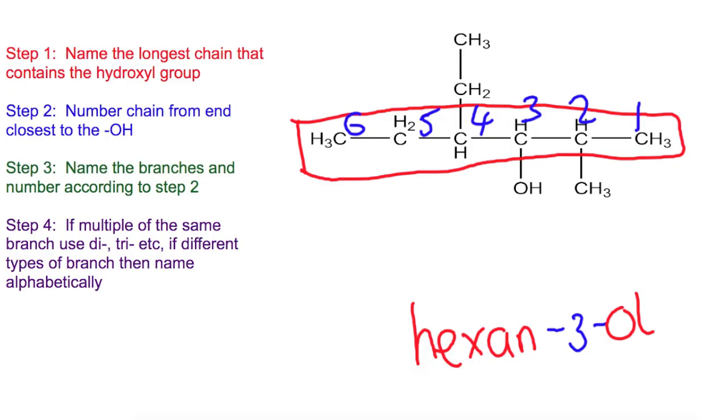Now we need to have a look at the branches. You'll notice that we have two branches here. So we've got this branch up at the top which has two carbons. So it's based on ethane. So this is an ethyl group. And we've got this one here on the second carbon which has got one carbon. So that's based on methane and is a methyl group.